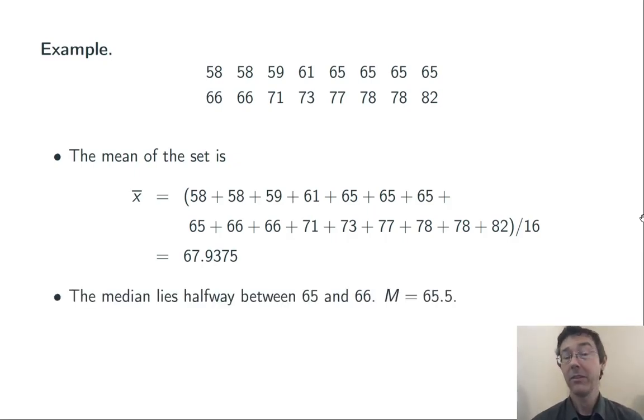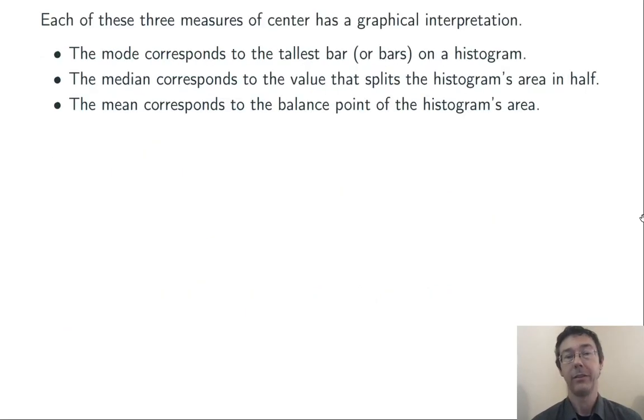The median is going to be 65.5. We have an even number of values in this set, so we take the two in the middle, 65 and 66, and go halfway between them. Take their average, 65.5. The capital M is pretty typical notation for a median of a sample. Finally, the mode is 65, the most common value in this set.